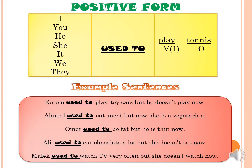That means when Karim was a boy, he used to play toy cars, but now he's grown and doesn't play anymore. Look at the second example: Ahmed used to eat meat, but now he's a vegetarian — now he doesn't eat meat.